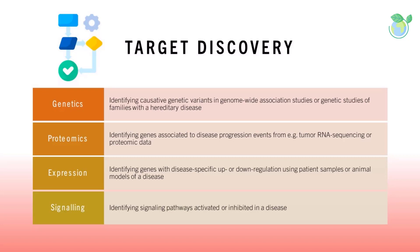Examples include: identifying causative genetic variants in genome-wide association studies or genetic studies of families with a hereditary disease; identifying genes associated with disease progression events from tumor RNA sequencing or proteomic data; identifying genes with disease-specific up- or down-regulation using patient samples or animal models of a disease; and identifying signaling pathways activated or inhibited in a disease.